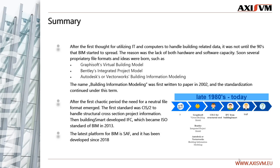After this first chaotic period, the need for a neutral file format emerged. The first standard was CIS2 to handle structural cross-section project information. Then BuildingSMART developed IFC, which soon became the de facto standard of BIM. The latest platform for BIM is SAF, and it has been developed since 2018.